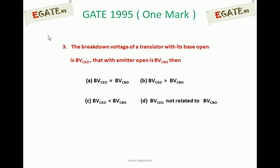The breakdown voltage of a transistor with its base open is BVCEO. The breakdown voltage of a transistor with emitter open is BVCBO. Then the relation between BVCEO and BVCBO.